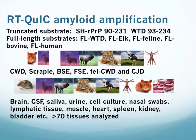The RT-QUIC assay is extraordinarily versatile. We've used many different substrates to detect many different types of prions. We predominantly use the Syrian hamster truncated form, residues 90 to 231. But we've also used substrates like the white-tailed deer substrate, which is equivalent to the Syrian hamster truncated substrate since we work on CWD in our lab. We've also used full-length white-tailed deer and full-length elk, feline substrate to detect FSE, full-length bovine substrate, and full-length human substrate. With these substrates, we've been able to detect prions in CWD, scrapie, BSE, FSE, feline CWD, and CJD.